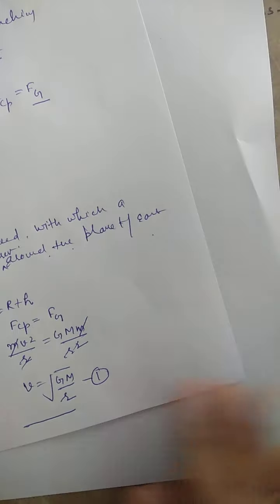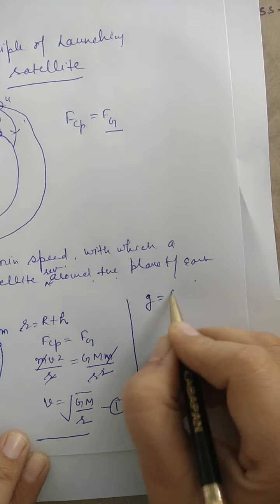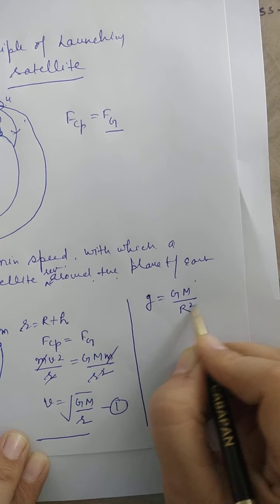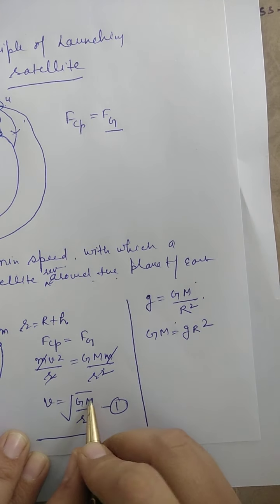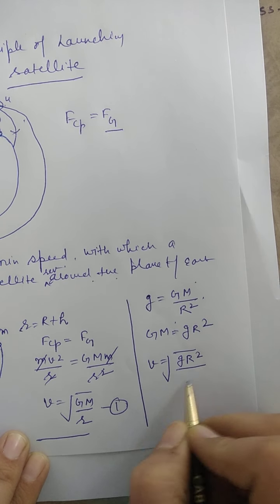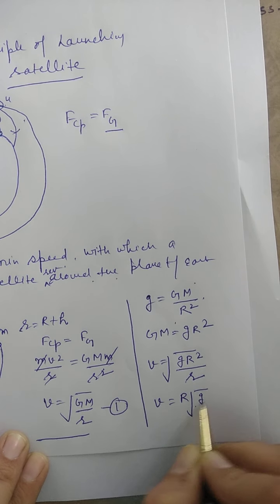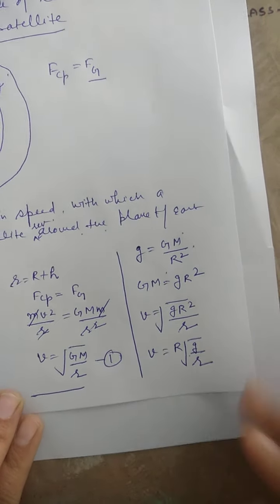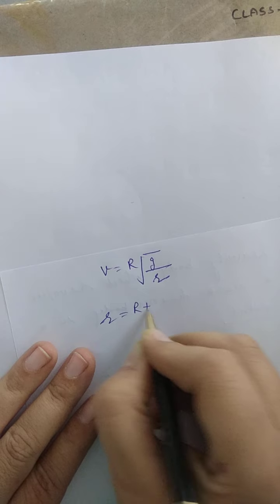Now if we express orbital speed in terms of small g: we know small g = GM/R², so GM = gR². Substituting into the first equation, v = √(gR²/r), which can be written as v = R√(g/r). Since r = R + h, we can write v = R√(g/(R+h)).